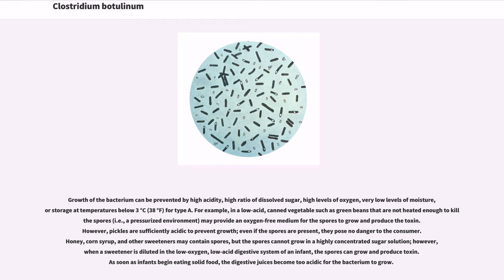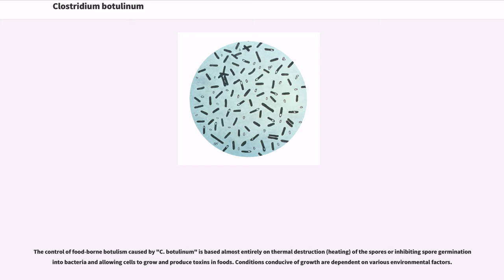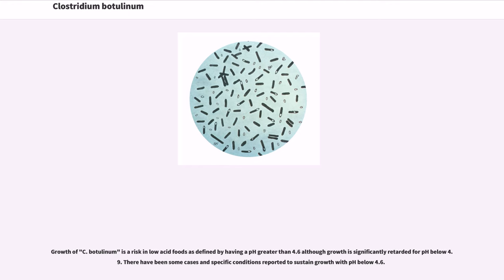The control of foodborne botulism caused by C. botulinum is based almost entirely on thermal destruction of the spores or inhibiting spore germination and preventing bacteria from allowing cells to grow and produce toxins in foods. Conditions conducive to growth are dependent on various environmental factors. Growth of C. botulinum is a risk in low-acid foods as defined by having a pH greater than 4.6, although growth is significantly retarded for pH below 4.9. There have been some cases under specific conditions reported to sustain growth with pH below 4.6.